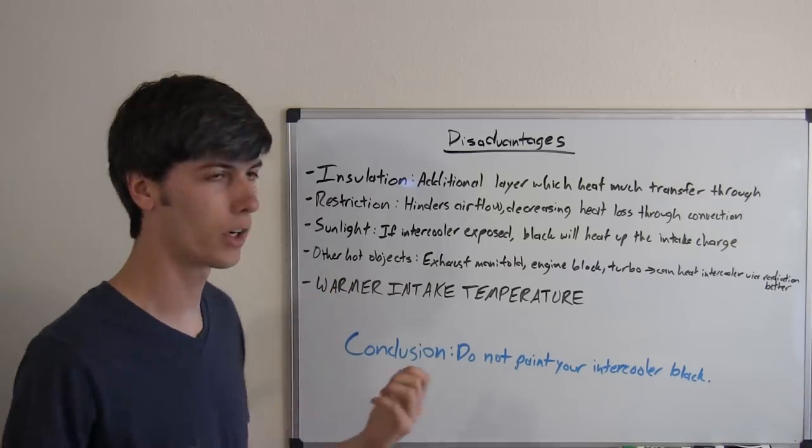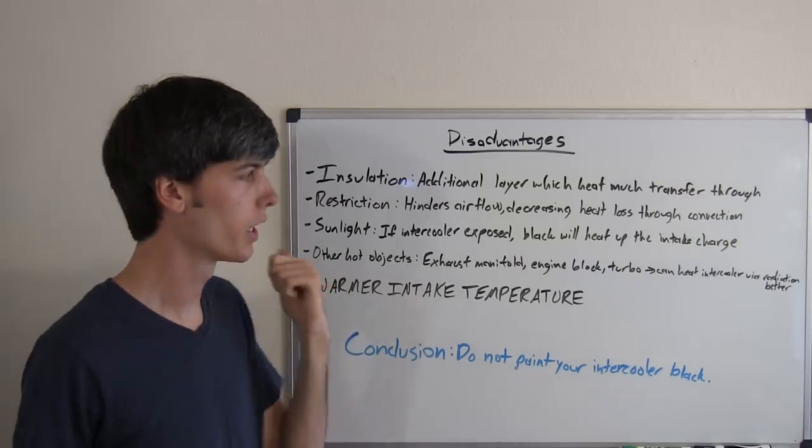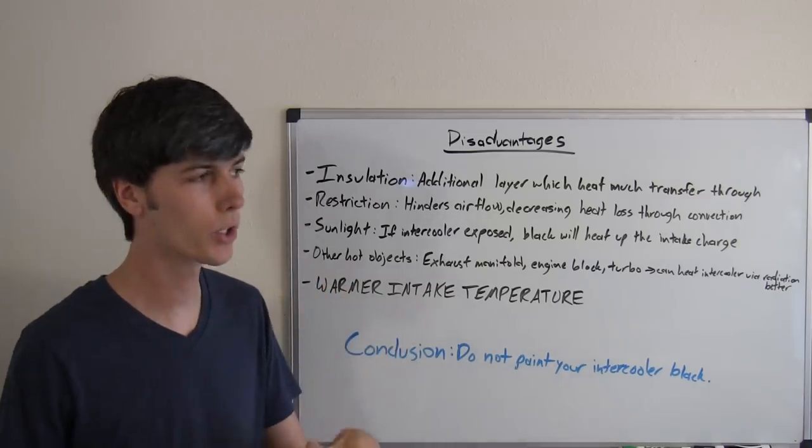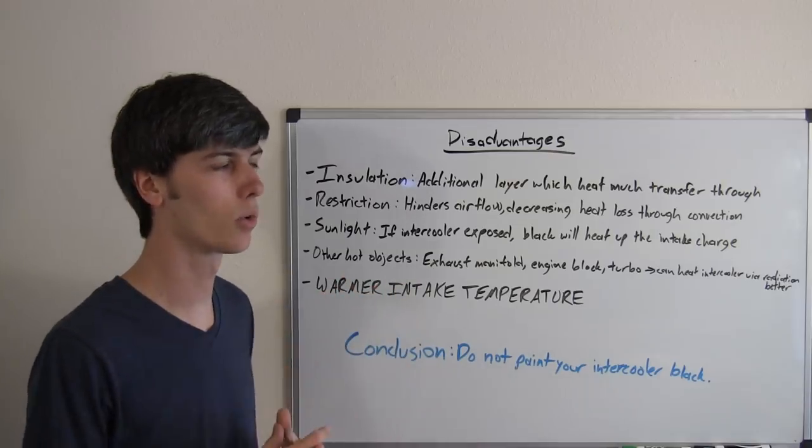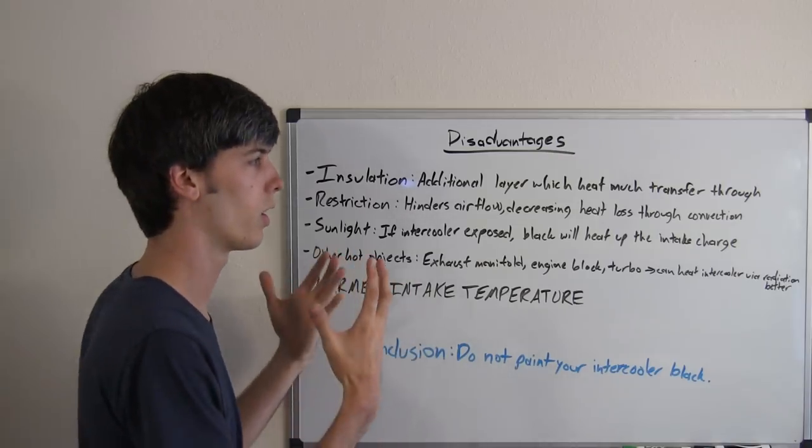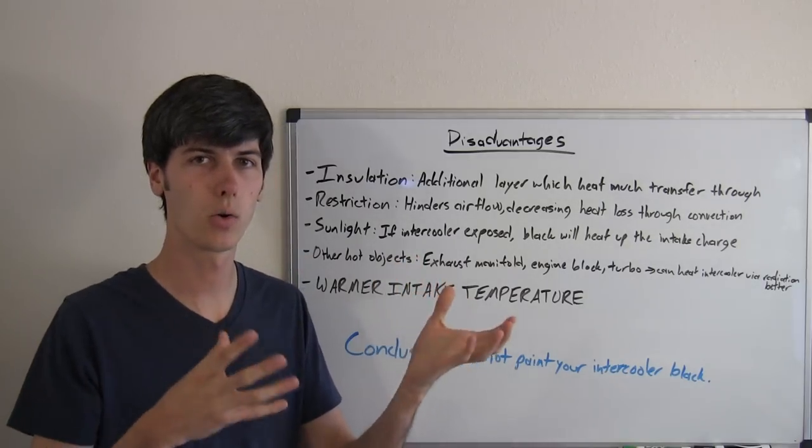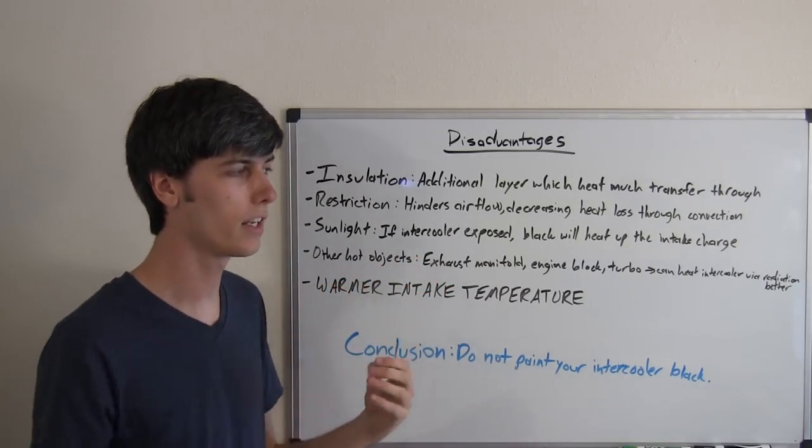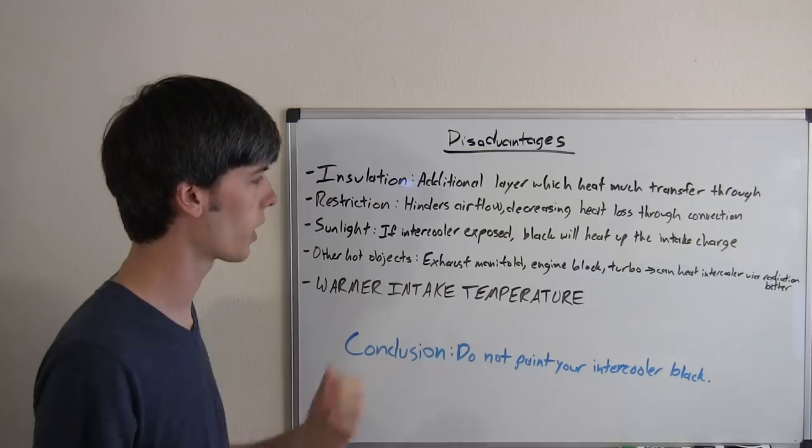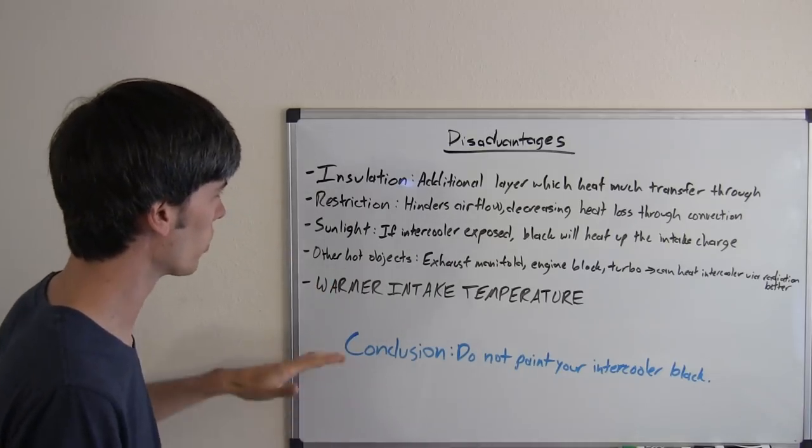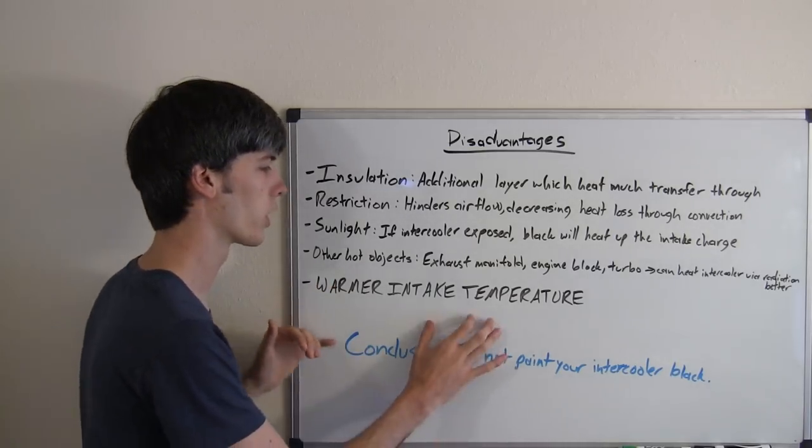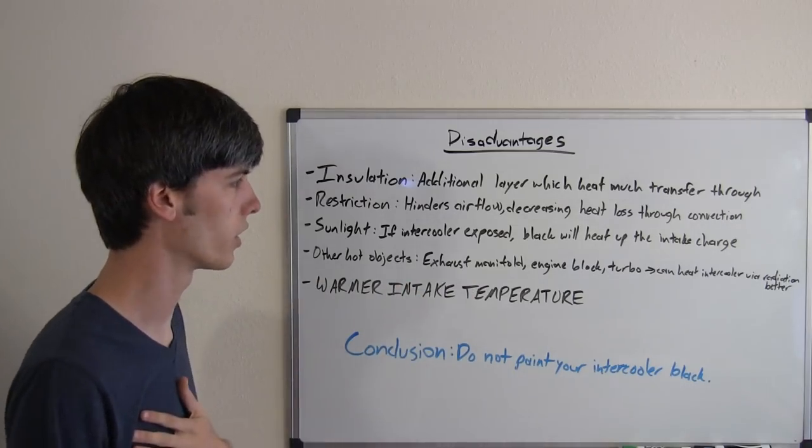The other thing, other hot objects are in your engine bay, so you've got your exhaust manifold, your engine block, your turbocharger, and if any of these items are near your intercooler, they're going to be radiating heat towards it. Now, wouldn't you want an aluminum core so that you're rejecting that heat rather than absorbing it all from these other options? Yes. So ultimately, the main disadvantage is you're going to have a warmer intake temperature going into your engine.